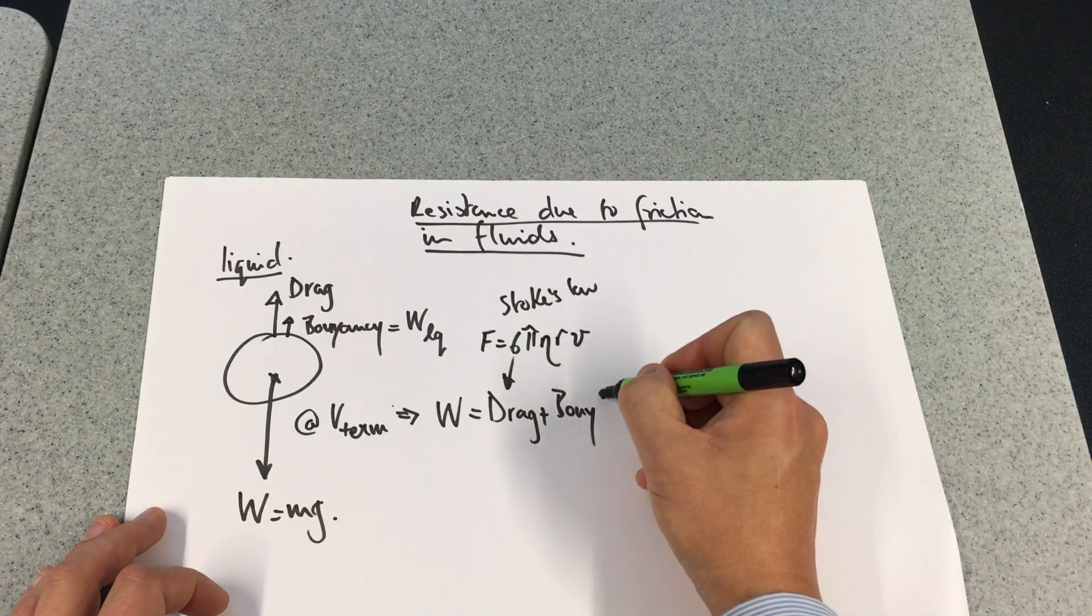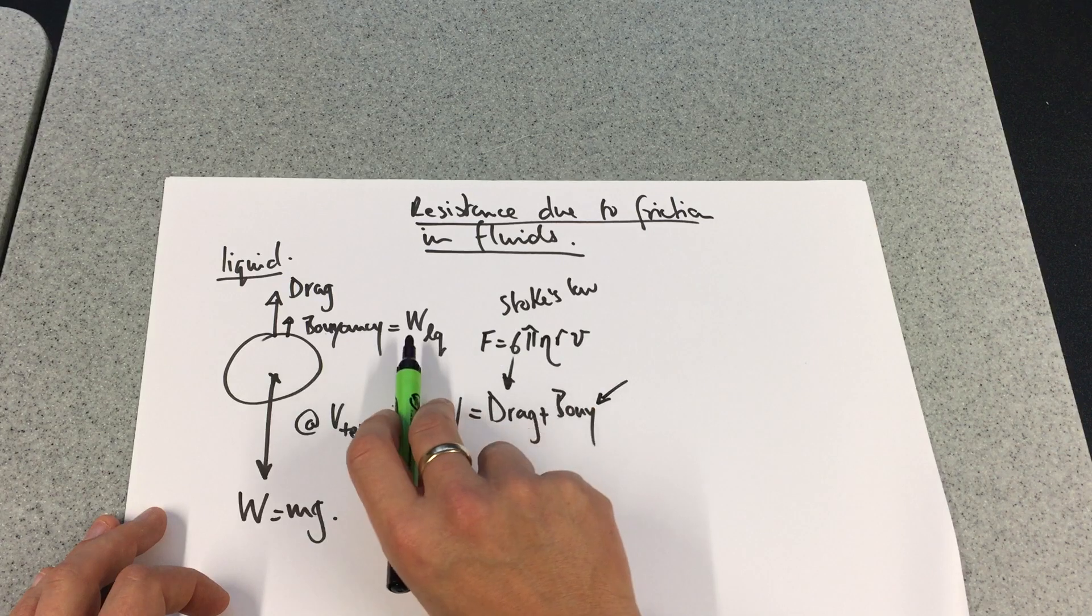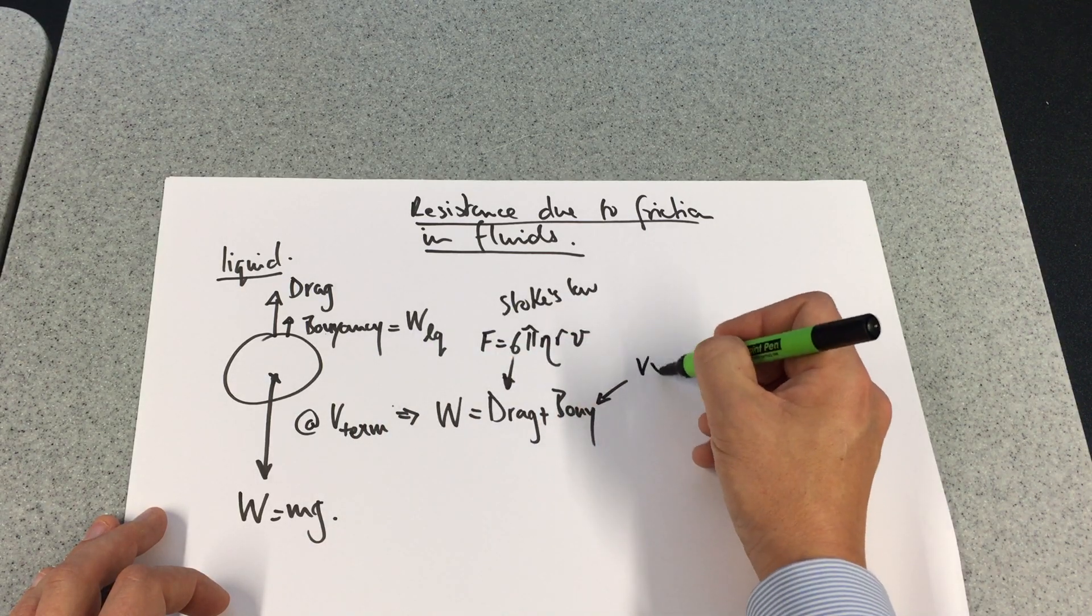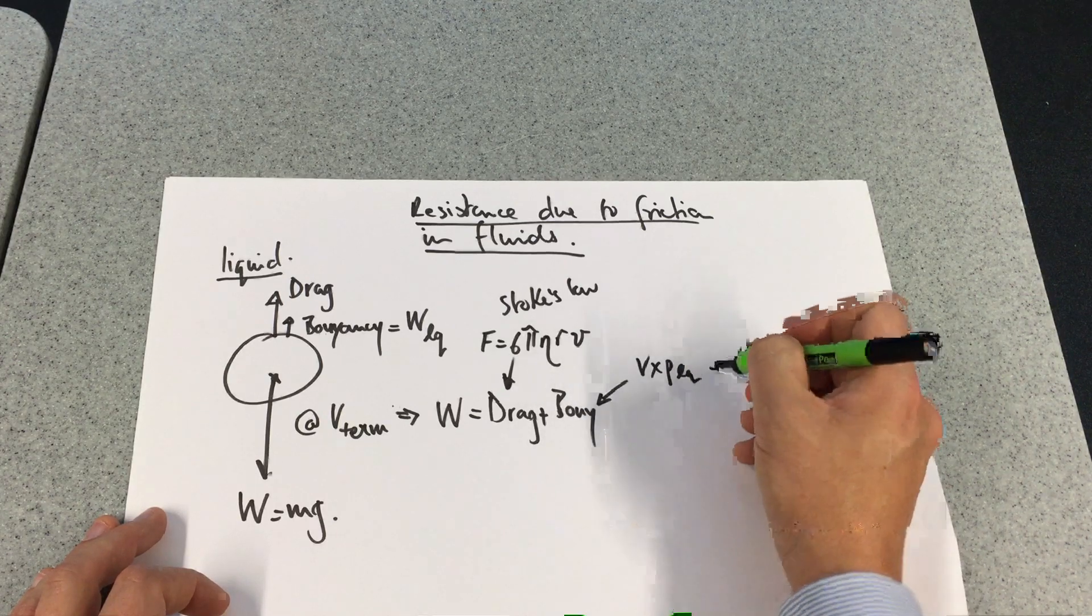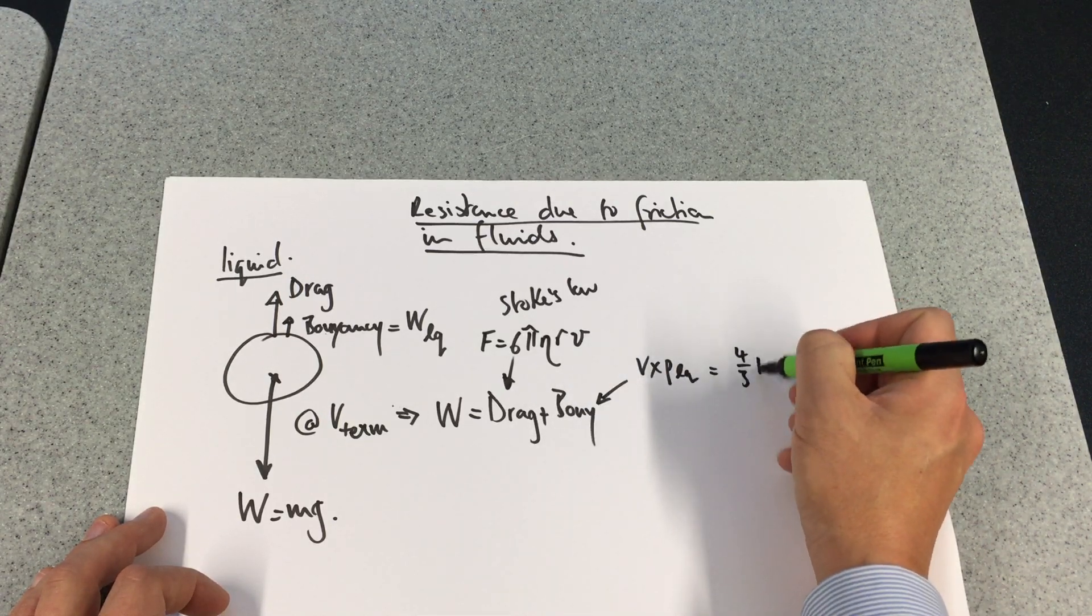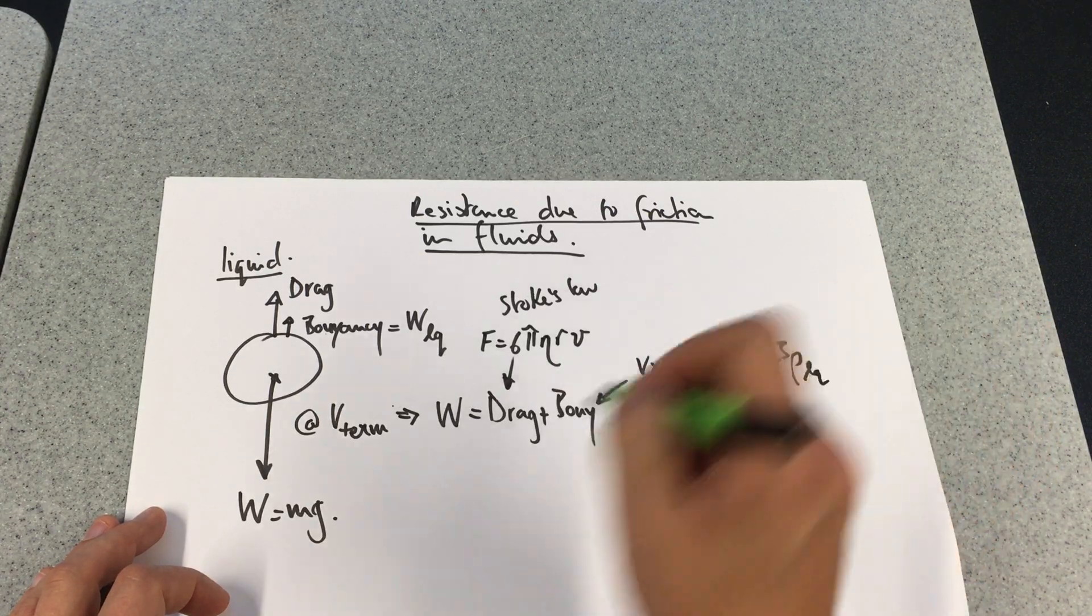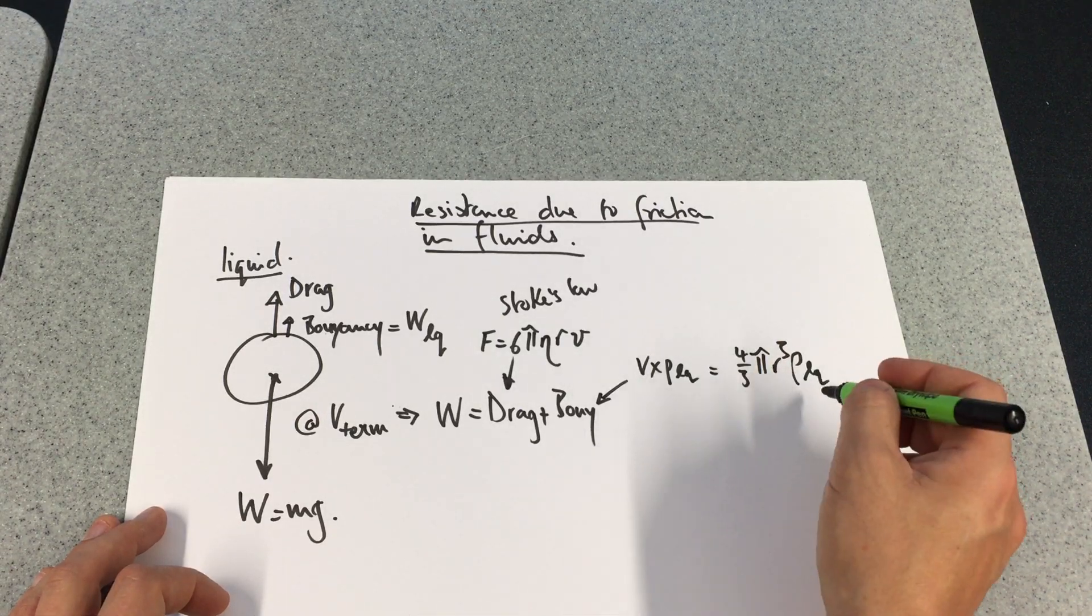The buoyancy is going to be equal to the volume times the weight of water displaced, which is the same as the volume times the density of the liquid, which is 4/3πr³ by the density of liquid displaced.